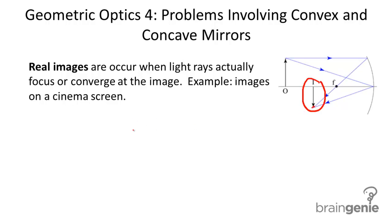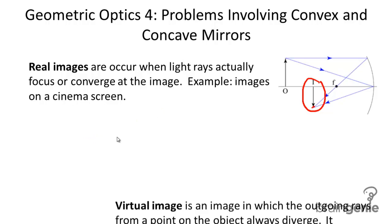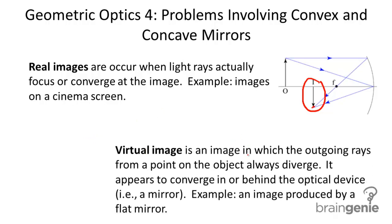Now this is contrasted with virtual images. A virtual image is an image in which the outgoing rays from a point on the object always diverge. It appears to converge in or behind the optical device, i.e. a mirror. An example, an image produced by a flat mirror.